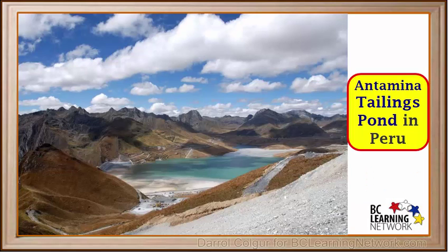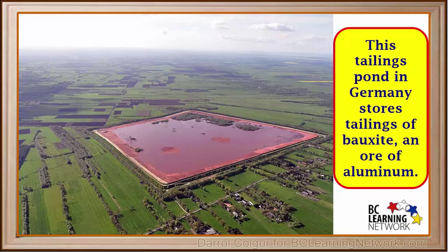Like this one, many tailings ponds use valley bottoms and have a dam to trap the tailings and the water. This tailings pond in Germany stores tailings of bauxite, an ore used to produce aluminum.